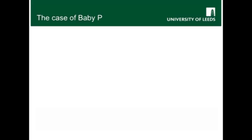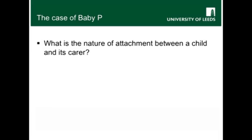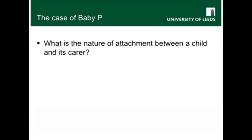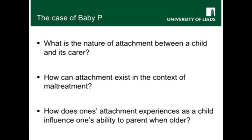Many also pointed out that removing children from their parents and carers is not necessarily a straightforward solution, as children form attachments to them even in the case of parental cruelty. These points raise some key questions about attachment: What is the nature of attachment between a child and its carer? How can it exist in the context of maltreatment? And how does one's attachment experience as a child influence one's ability to parent when older?